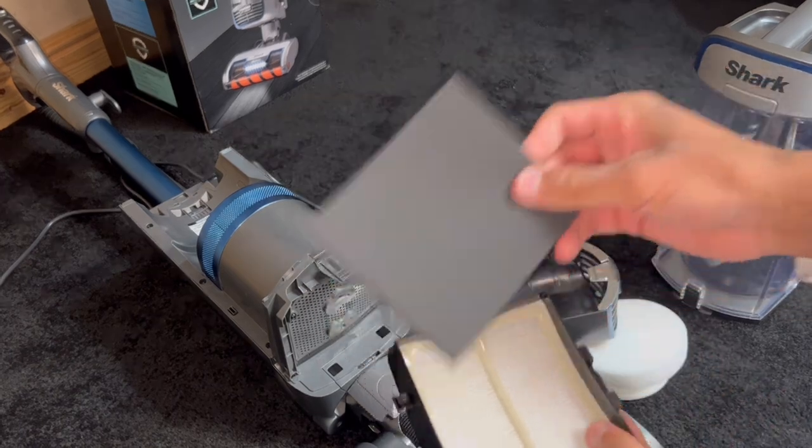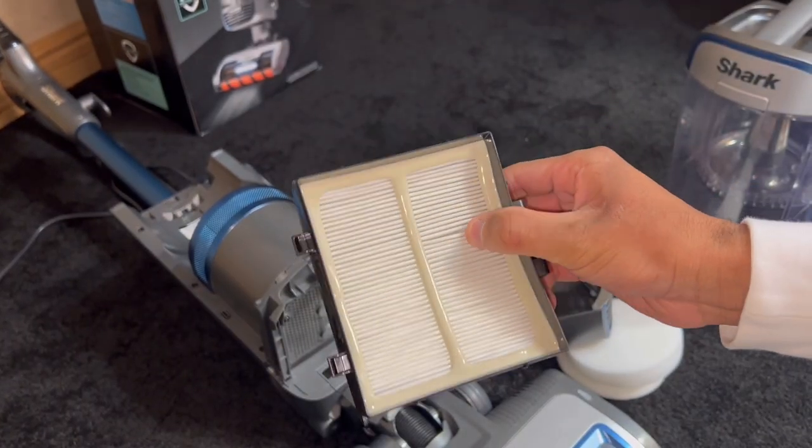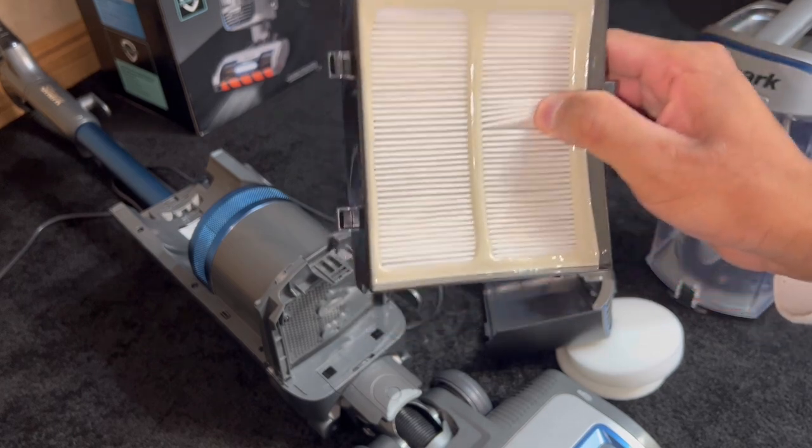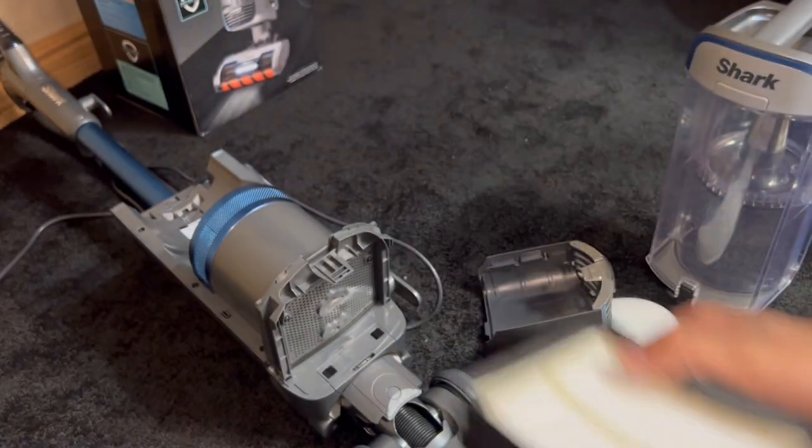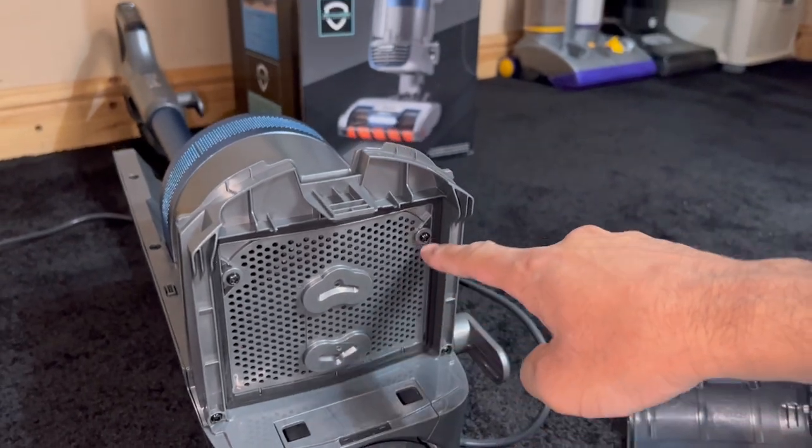You've got stage four filtration, which is another sponge. And stage five, which is the HEPA filter that captures the finest, smallest dust particles in the whole vacuum. You've got seals all around the system as well.